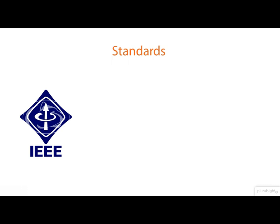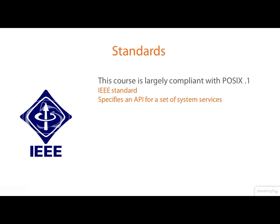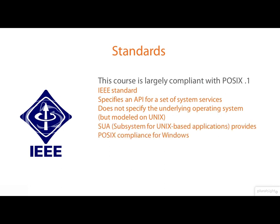Most of the stuff you'll see in this course — at least the C language stuff — is formally standardized in an IEEE standard known as POSIX.1. It specifies an API for a set of system services. It's careful not to specify what the underlying operating system should be, though it is closely modeled on UNIX. In fact there's a subsystem called 'Subsystem for UNIX-based Applications' that provides POSIX compliance for Windows. I did consider calling the course 'POSIX Systems Programming' but decided against it, as most people probably wouldn't know what it meant. I also haven't been fastidious about pointing out subtle differences between the Linux implementation and the various standards.